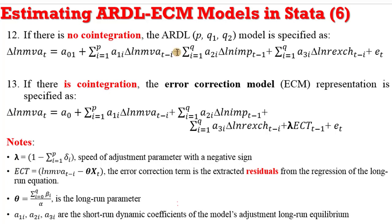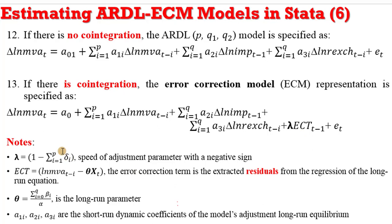I also showed you that if there is no cointegration, this is how you express the equation mathematically — this is what you state if there is no cointegration. If there is cointegration, you have to specify an error correction model, which comprises both the short run — those equations having the change operators — and the ECT component. The ECT captures the long-run representation in the model, and below you can see all the characteristics of the error correction model.